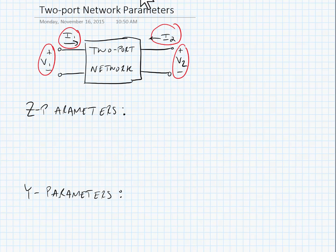We use Z-parameters when we're looking at a transconductance amplifier. Remember that a transconductance amplifier takes an input of voltage and outputs a current, and the feedback network needs to be the opposite of that — it takes an input of current and outputs a voltage. Our Z-parameters are defined by the following matrix equation.